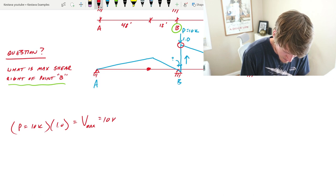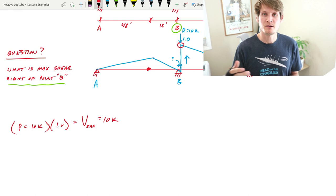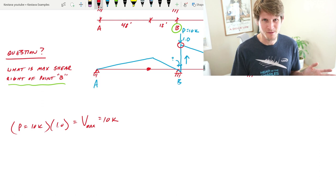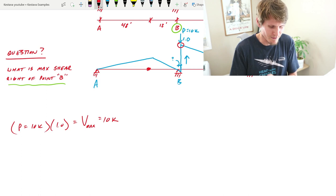Well, that's simply just P times the area factor. So V max is just equal to 10 kips when the point is located just to the right of point B. That's when you get your maximum shear due to that point load at just to the right of point B. Makes sense, right? Like wherever that point load is located, that's where your max shear is going to occur for the most part.